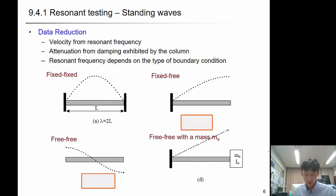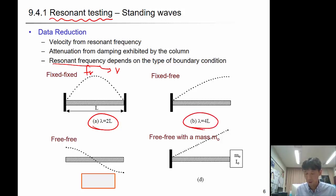In resonant column test, to reduce the data and obtain the property or parameter you want, there should be some calibration procedures. That starts from the boundary condition. The resonant frequency is directly correlated to the velocity of the specimen. To get the resonant frequency, you have to define and know the boundary condition.